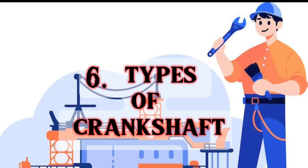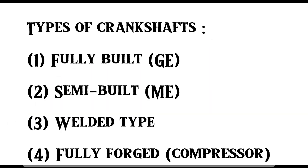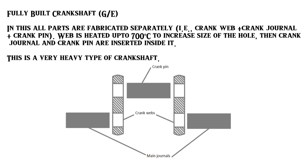Sixth question: Types of crankshaft. There are four types. First is the fully built crankshaft, used in auxiliary engines. Second is the semi-built crankshaft, used in main engines. Third is the welded type crankshaft. Fourth is the forged type crankshaft, used in compressors.